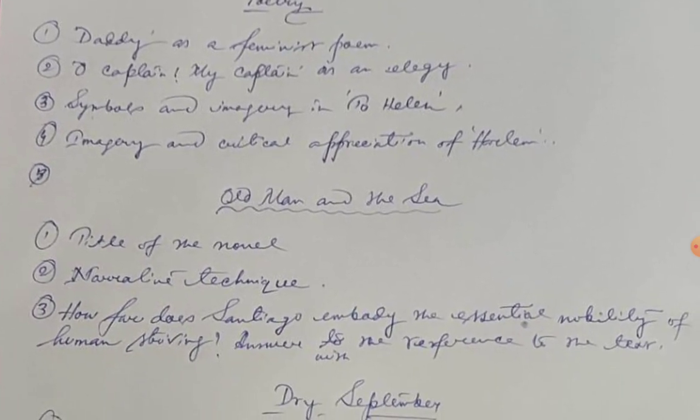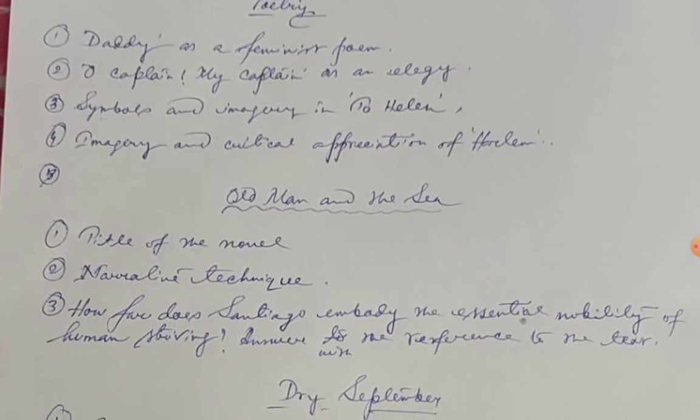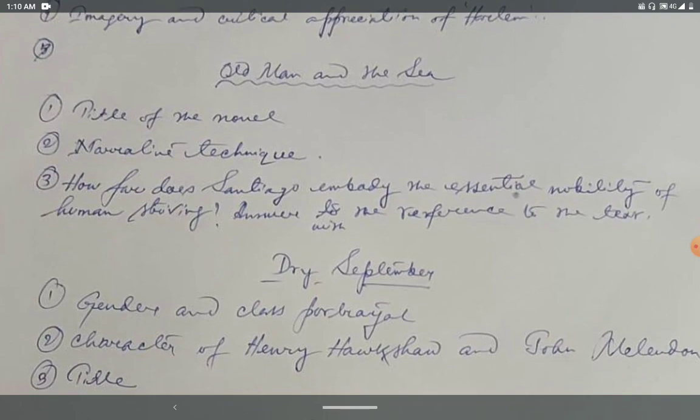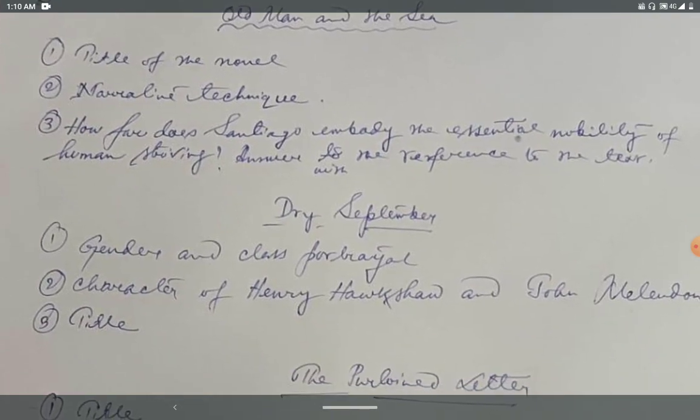Next, 'The Old Man and the Sea,' the novel by Hemingway. Question one: the title of the novel. Question two: narrative technique. Question three: how far does Santiago embody the essential nobility of human striving — answer with reference to the text.